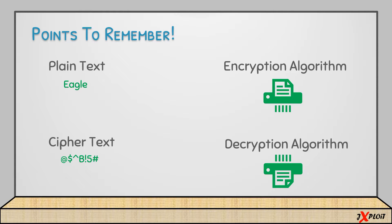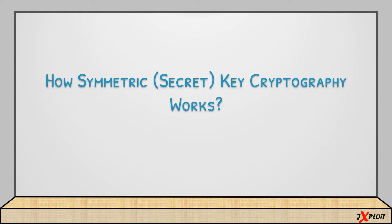To note: the encryption algorithm is applied on the plain text, and the decryption algorithm is applied on the ciphertext. The fifth and most important component is the secret key. The secret key is used both in the encryption and decryption process. Because symmetric key cryptography uses only a single secret key for both processes, it is also known as secret key cryptography.